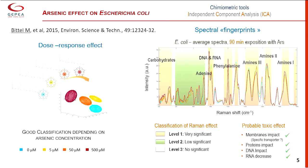In a previous study, we showed that the spectral fingerprint of Escherichia coli exposed to arsenic is different after exposition to different concentrations of arsenic, and we were able to show that the fingerprint is correlated with dose-response effects. From this study, we decided to apply this technology to more complex organisms.